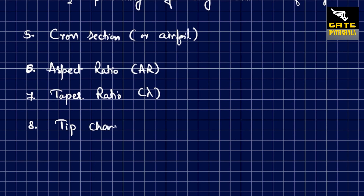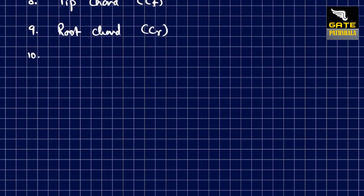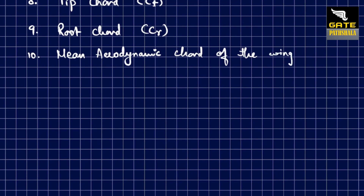You also have the tip chord, denoted by Ct, and the root chord of the wing, denoted by Cr. Then there is the mean aerodynamic chord of the wing, denoted by MAC or c-bar.